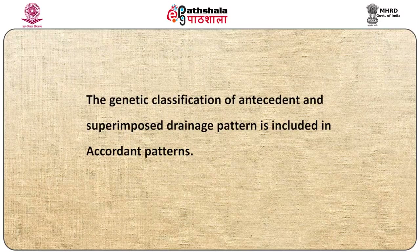The drainage pattern also reflects the original slope of land, original structure, diastrophism along with the geologic and geomorphic history of the drainage basin. Two distinct types of drainage patterns identified by geomorphologists are accordant and discordant drainage patterns. The accordant pattern correlates to the structure and relief of the landscape over which it flows and includes the empirical classification as given by Howard, while the discordant drainage patterns do not correlate with the geology and topography of the region. The genetic classification of antecedent and superimposed drainage patterns is included in the discordant patterns.